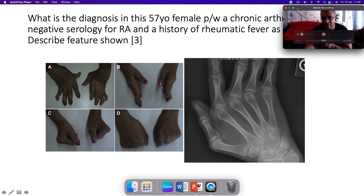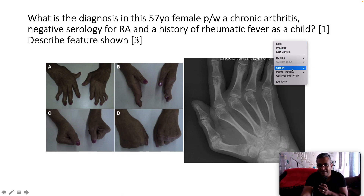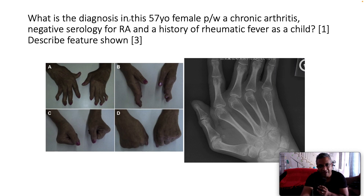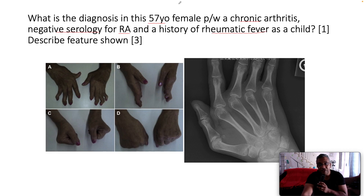So this is the stem of the question — remember every single word in the stem is important. What is this diagnosis in a 57-year-old female who presents with chronic arthritis, negative serology for rheumatoid arthritis, and a history of rheumatic fever as a child? She's 57, she's female, she's got chronic arthritis, negative serology for RA, and a history of rheumatic fever as a child.